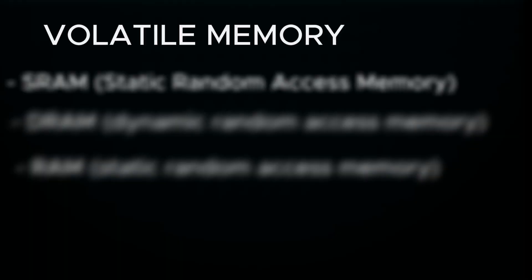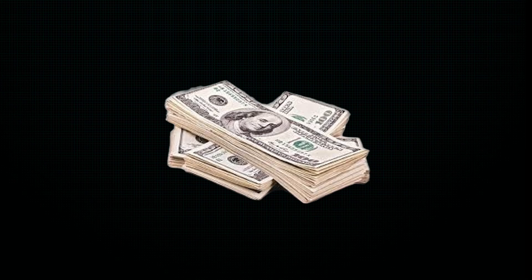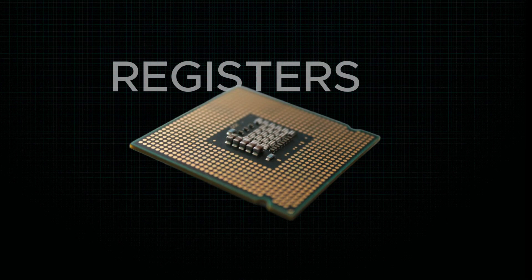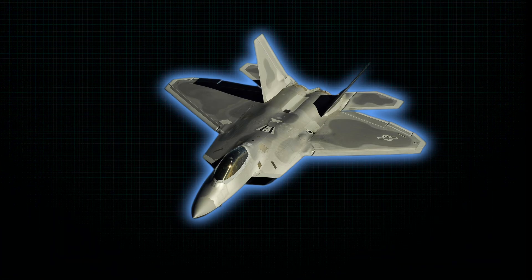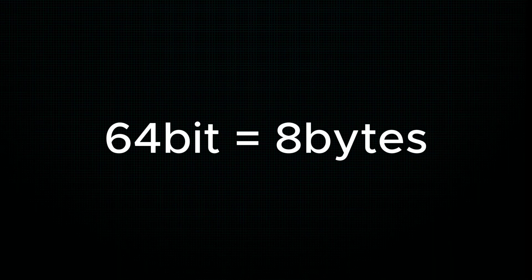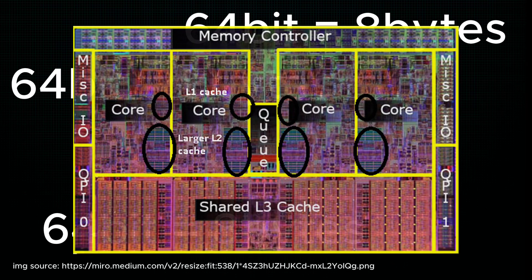Let's start with volatile memory. The fastest memory in the world is SRAM — Static Random Access Memory. It's complex and expensive to manufacture, so it's primarily used for CPU registers and CPU cache. Registers are the immediate workspace for the processor, holding the data it is currently manipulating. They are extremely fast but tiny. A single register on a 64-bit computer holds 8 bytes. A single CPU contains multiple registers, built into the processor itself.